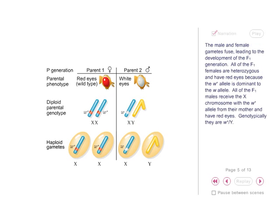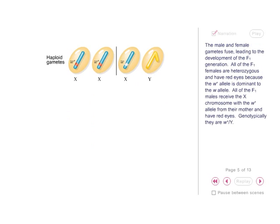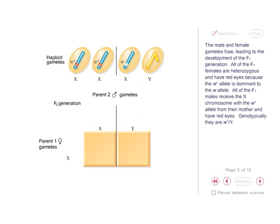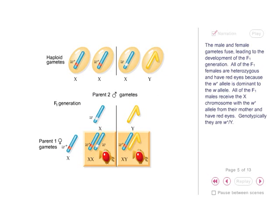The male and female gametes fuse, leading to the development of the F1 generation. All of the F1 females are heterozygous and have red eyes, because the W+ allele is dominant to the W allele. All of the F1 males receive the X chromosome with the W+ allele from their mother and have red eyes. Genotypically, they are W+, Y.